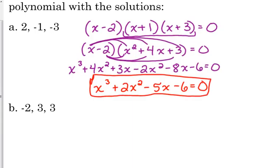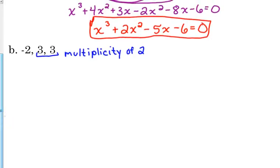We are told that negative 2, positive 3, and positive 3 are solutions. Now, I know it seems weird that 3 is repeated, but that's what we call multiplicity. 3 is a root or a solution or a zero with multiplicity of 2. We'll look at the graph of this one after we write its equation to see how that looks on the graph. So if negative 2 is a solution, then x plus 2 is a factor. If 3 is a solution with multiplicity 2, then we have the factor x minus 3 twice.